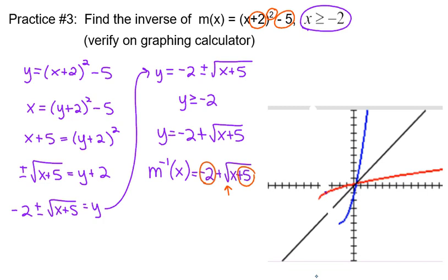So what we're looking at is this is the graph of the original m of x. And then this is the graph of the inverse, the square root function. It does look like a square root function, the shape we're used to. And do those look like reflections across the line y equals x that we see there in black? Yes, they do.